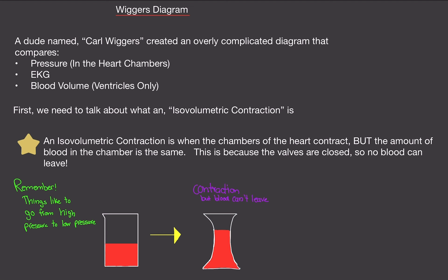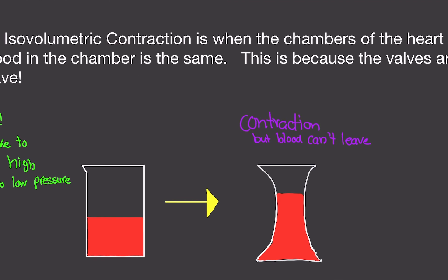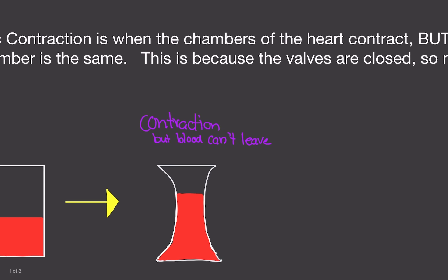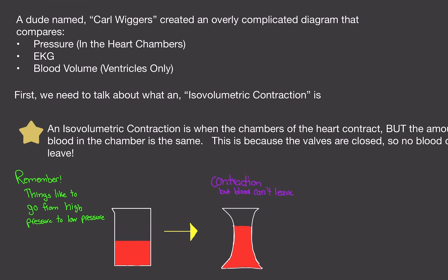The best way to explain what it is, is with this drawing. Imagine you have a cup with juice or blood in it, and it has a lid on the top. Then you squeeze the cup — you contract the cup — but none of the liquid actually spills out because of the lid. That's what an isovolumetric contraction is: a contraction where the volume stays the same.